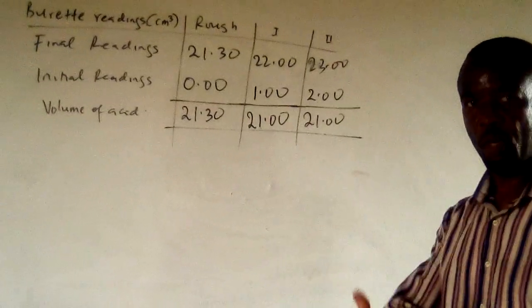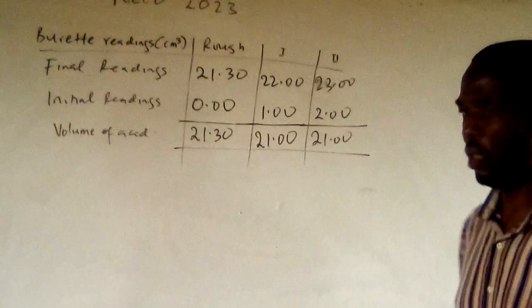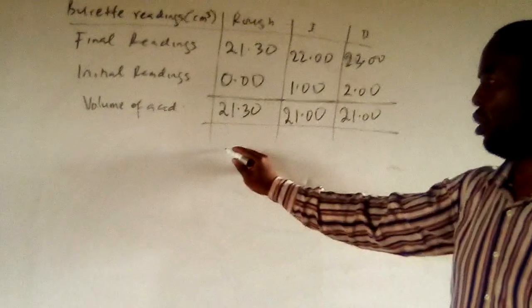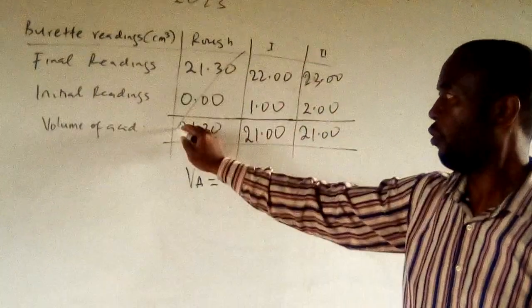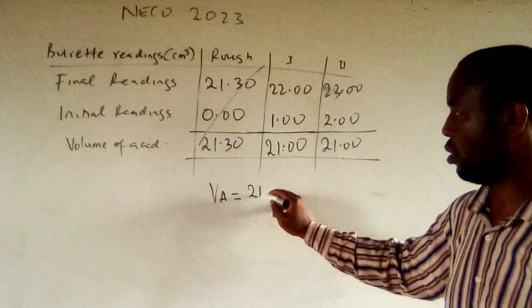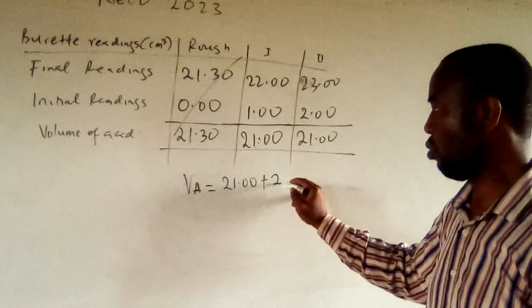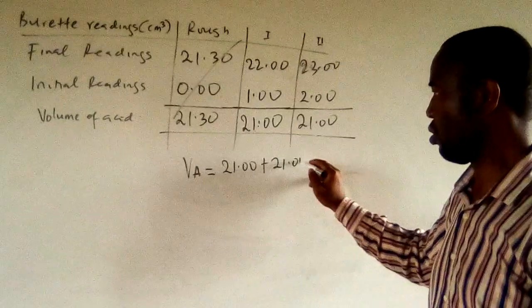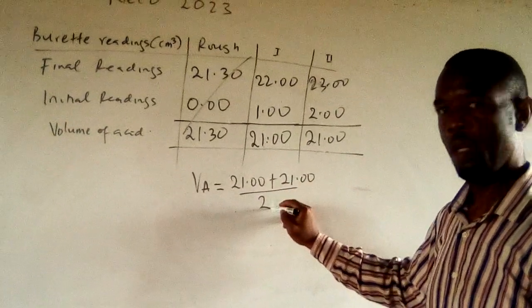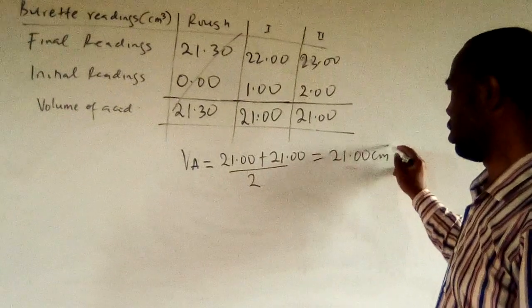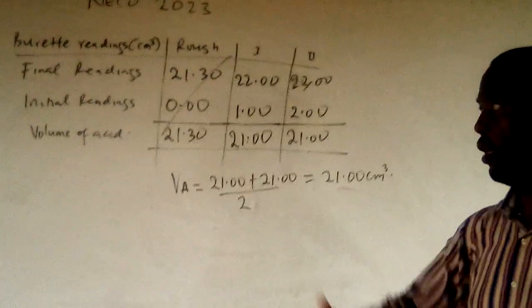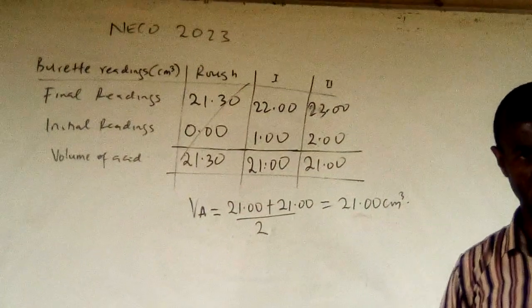We calculate the average titre, ignoring the rough. We use the two consistent readings: 21.00 + 21.00 divided by 2 gives an average titre of 21.00 cm³. This is the correct average titre for the NECO June 2023 titration.